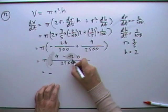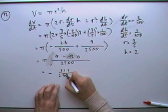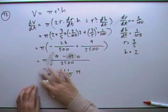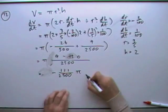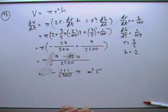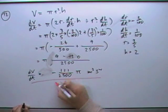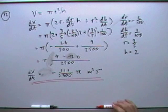So I've got negative 111 over 2500π. Well, that's what I get anyway. And that must have been, it's in meters, meters cubed per second for the rate of change of volume. I think anyway. Right, that was question 12.